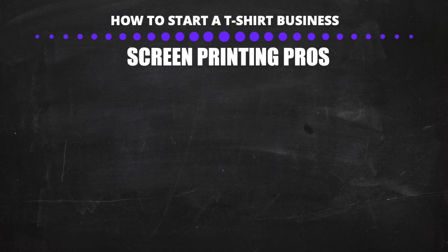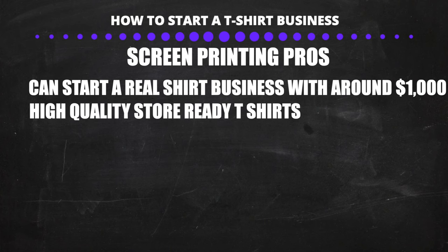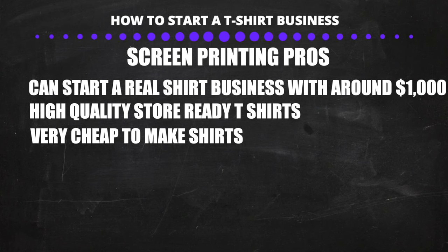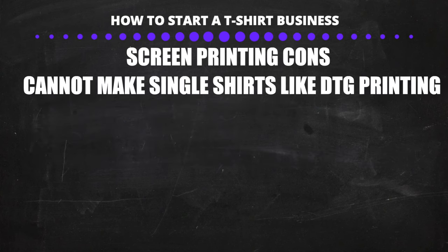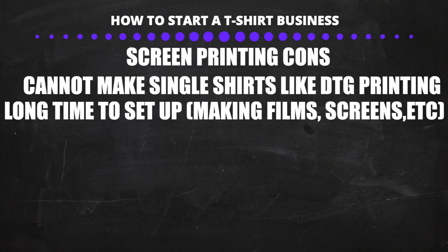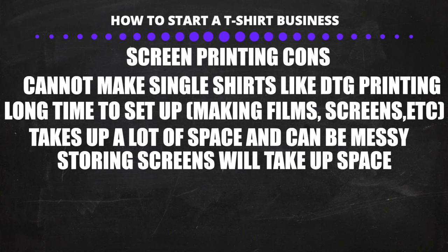Let's talk about the pros and cons of screen printing. The pros are: you can start a professional t-shirt business with around $1,000, the quality is great and shirts will withstand a lot of washes, the cost to make a t-shirt is extremely cheap, and you can make all kinds of cool shirts like foil. The cons are: if you plan to make just one t-shirt it won't make sense because startup time and cost aren't worth it, it takes a long time to set everything up, it can take up a lot of space and be a messy process, and unlike DTG you have to store your screens somewhere.